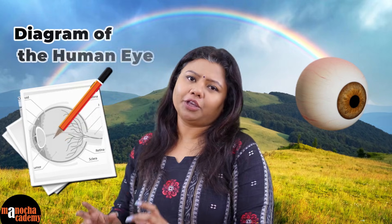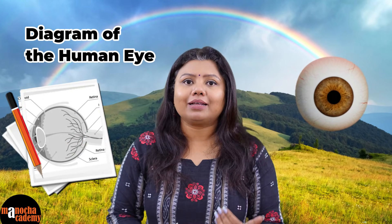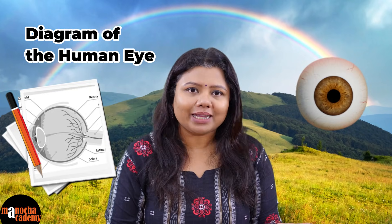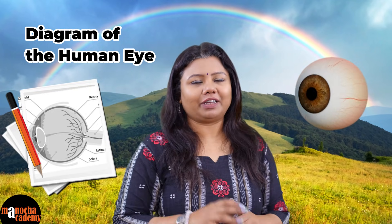Do you realize that as you see the nature, the world, the earth, and everything on this planet with your eyes, your eyes are working in a very complex manner? There are so many different parts involved, so many different structures, that sometimes it's very difficult to draw them. In this video we are going to learn about drawing the human eye, and I'm going to try to make this easy for you so that after you have drawn the diagram you will be amazed that you've drawn a perfect diagram of the human eye.